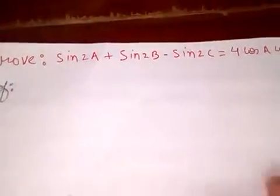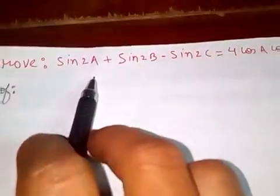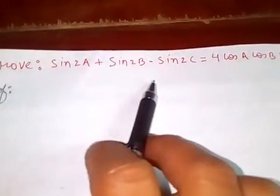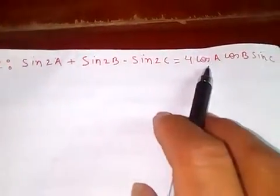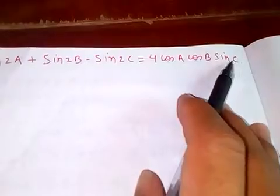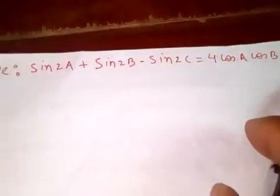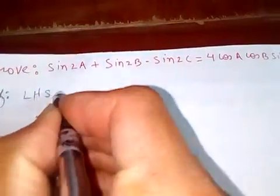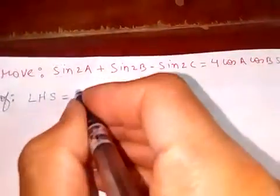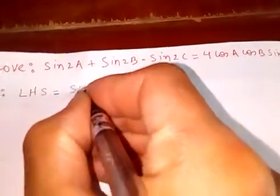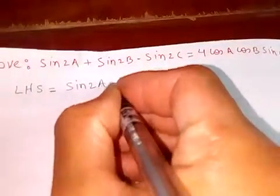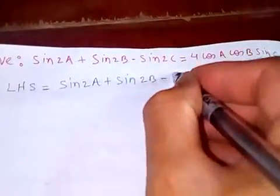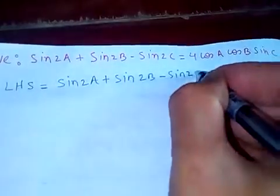Hello friends, today let's prove that sine 2A plus sine 2B minus sine 2C is equal to 4 cos A cos B sine C. Let's start from the left hand side: sine 2A plus sine 2B minus sine 2C.